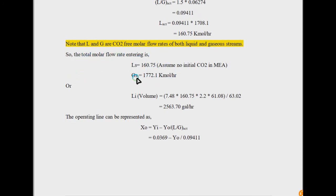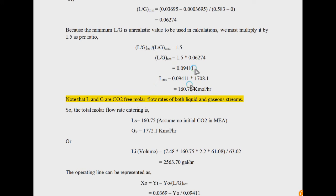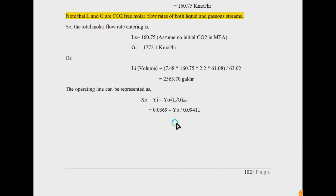The total molar flow rates are calculated from the material balance. You can also set up an operating line from the simple material balance. The operating line behaves as a state function — it has defined initial and final points; if you fix Y_i, X_0 is determined from material balance. The equilibrium concentration, however, is not a state function; it is based on equilibrium solubility and the maximum capacity of the solvent to absorb the solute.